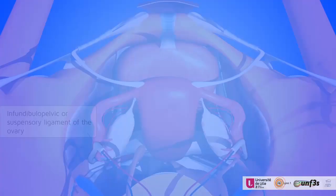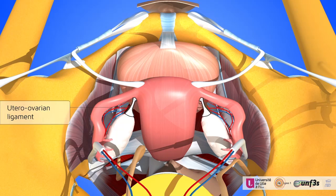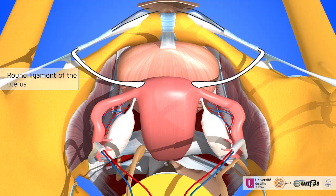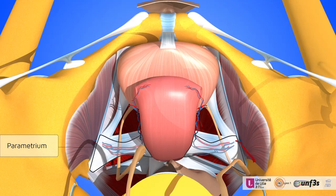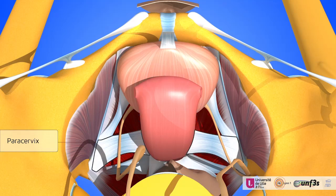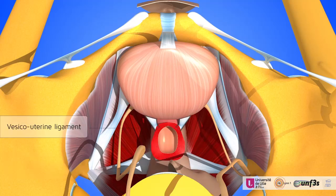This upper view helps us to localize successively all the different ligaments: utero-ovarian, round ligaments, parametrium, paracervix, and utero-sacral ligaments.